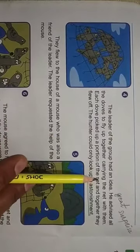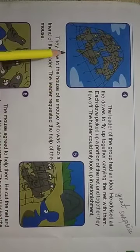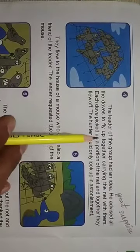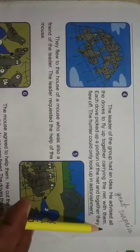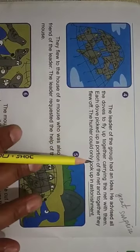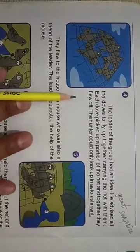The leader of the group had an idea. A leader out of those doves had an idea. What was the idea? He advised all the doves to fly up together carrying the net with them. All the doves will fly together carrying the net and moving to a safer place. The doves picked up a portion of the net and together they flew off.